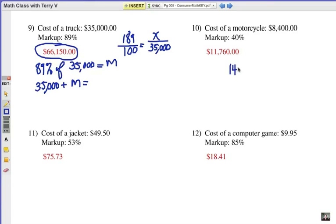Number 10, you are selling it for 140% of its original cost. On the other side, it's x over 8,400. Pretty easy. Cross multiply, those two numbers multiply, divide by 100.